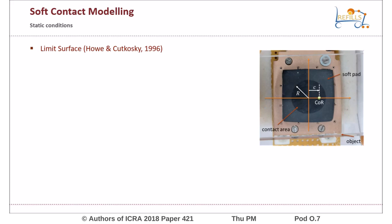We use the limit surface model, which gives us information about the maximum force and torque that we can apply before slippage occurs. Look at a picture where the soft sensor pad of our tactile sensor is in contact with the rigid transparent object. You can clearly see the circular contact area of radius r.